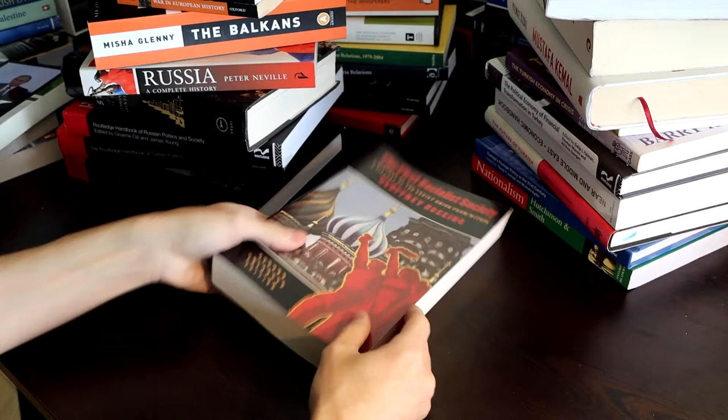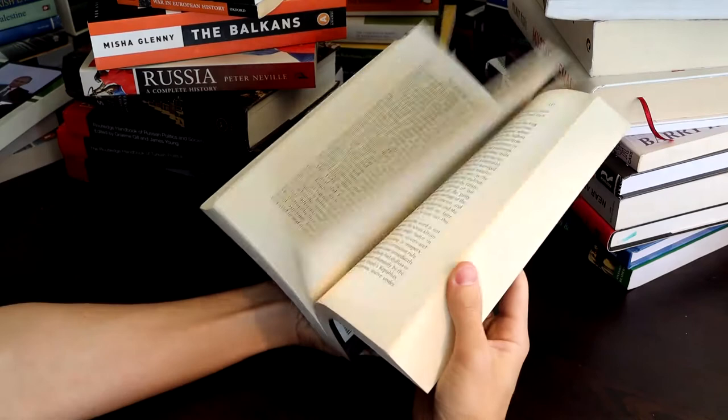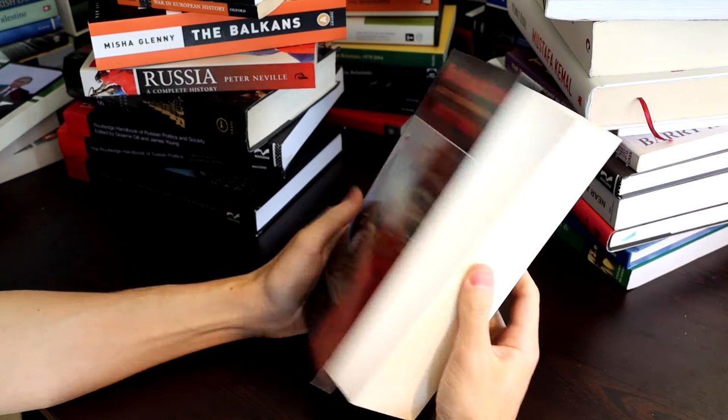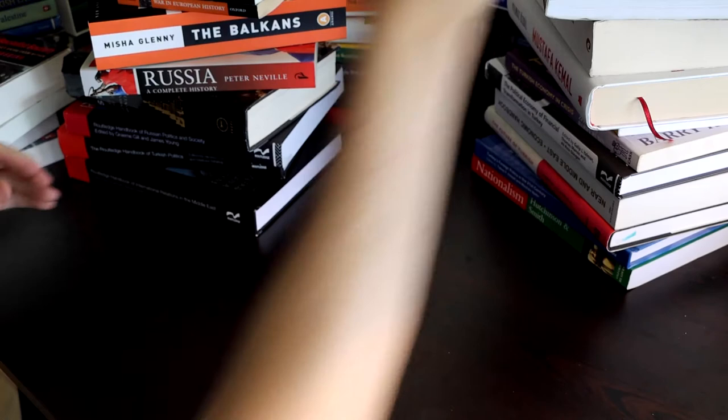The First Socialist Society. A History of the Soviet Union from Within. That's a very controversial take as well. People say that Russia wasn't truly a socialist country. That's a very hashed on old debate.